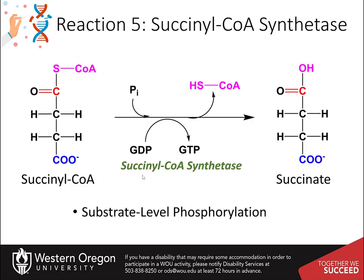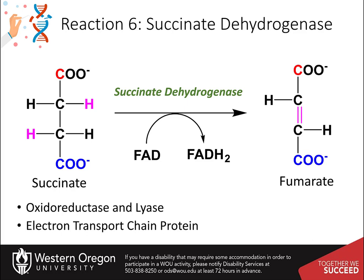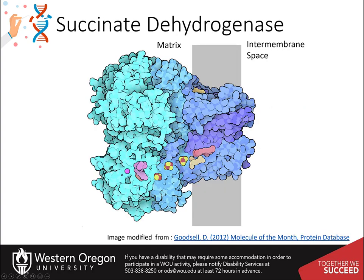The succinyl-CoA synthetase is an enzyme that creates a molecule of GTP, an ATP equivalent, through the phosphorylation of GDP. This process releases the coenzyme A and forms a molecule of succinate. Succinate dehydrogenase then mediates the oxidation of succinate to form fumarate through another novel dehydrogenase mechanism. This step is performed by a protein complex that is bound in the membrane of the mitochondrion, linking this citric acid cycle task directly to the electron transport chain and making the transfer of electrons from food molecules streamlined.